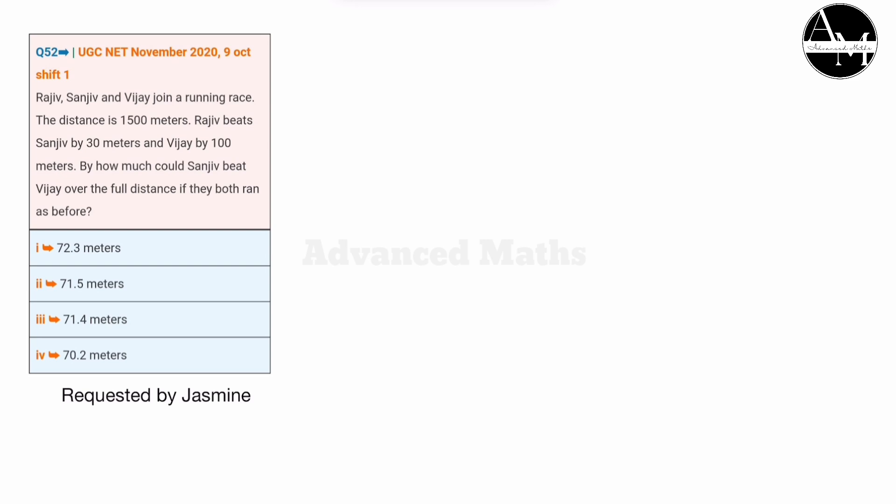The problem involves Rajiv, Sanjeev, and Vijay in a race. Rajiv and Sanjeev start together, and we need to find the distance relationship between them when they run 30 meters and 100 meters respectively.